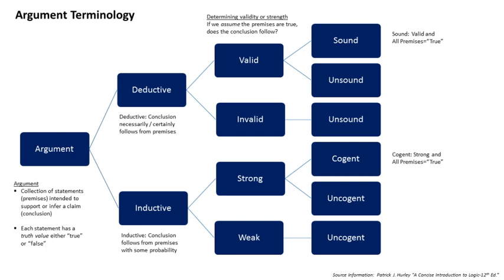A deductive argument asserts that the truth of the conclusion is a logical consequence of the premises. Based on the premises, the conclusion follows necessarily. For example, given premises that A equals B and B equals C, then the conclusion follows necessarily that A equals C. Deductive arguments are sometimes referred to as truth-preserving arguments. A deductive argument is said to be valid or invalid: if one assumes the premises to be true, ignoring their actual truth values, would the conclusion follow with certainty? If yes, the argument is valid; otherwise, it is invalid.